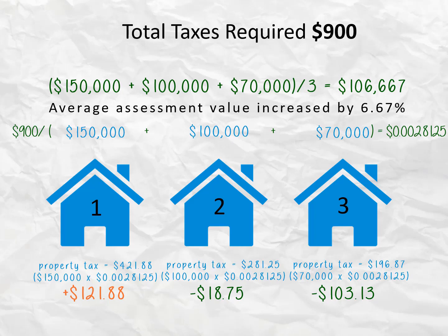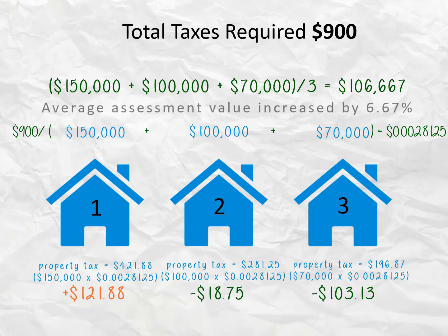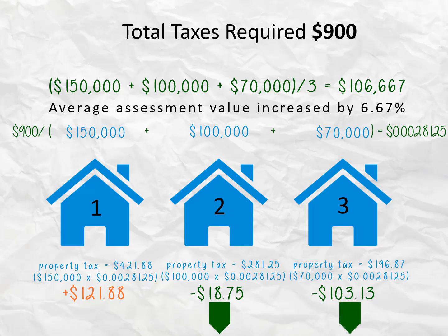As you can see, how your taxes change each year depends on how your property assessment changes in comparison to the average assessment changes in the taxing district. The average assessment increased by 6.67 percent in year two. Because the assessments for houses two and three were less than the average, they had a tax decrease, even though the total amount of tax dollars collected stayed the same. House one, with a 50% increase in assessment value, had a significant increase in taxes.